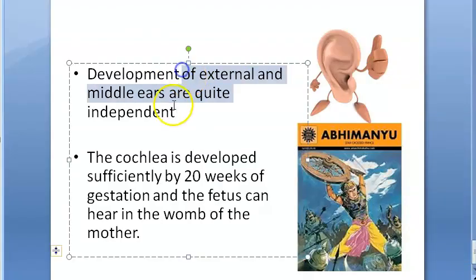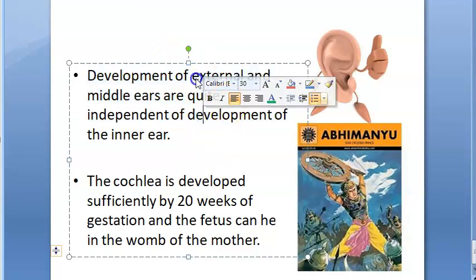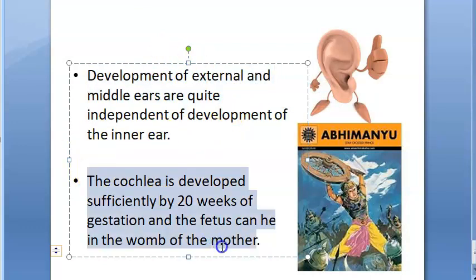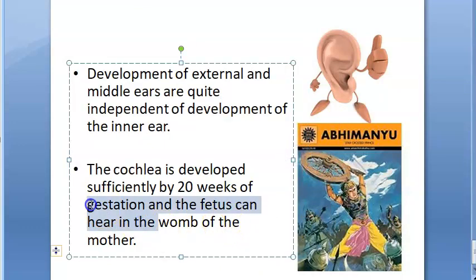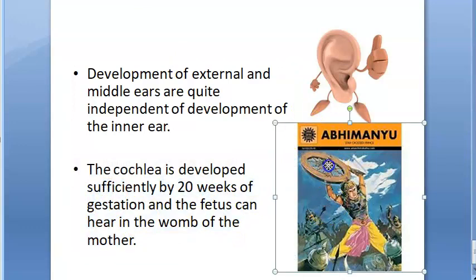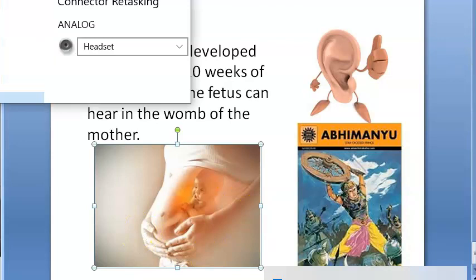Development of the external and middle ear are quite independent from development of the inner ear. So sometimes the inner ear can be fine while the external ear is not, or vice versa. The cochlea is sufficiently developed by 20 weeks of gestation, meaning the fetus can hear in the womb.